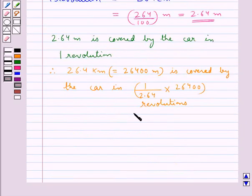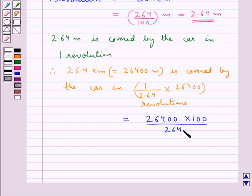That is equal to 26,400 times 100 upon 264. Since 264 times 100 is 26,400, this simplifies to 100 times 100, equal to 10,000 revolutions.